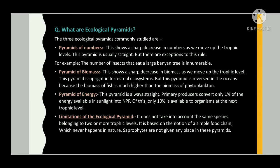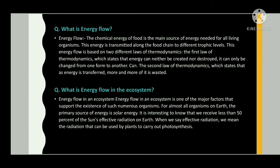Pyramid of energy — this pyramid is always upright. Primary producers convert only about 1 percent of the energy available in sunlight into NPP (net primary productivity). Of this, only 10 percent is available to organisms at the next trophic level. Limitations of the ecological pyramid: it doesn't account for species belonging to two or more trophic levels, it is based on the notion of a simple food chain which never happens in nature, and saprotrophs are not given any place in these pyramids.